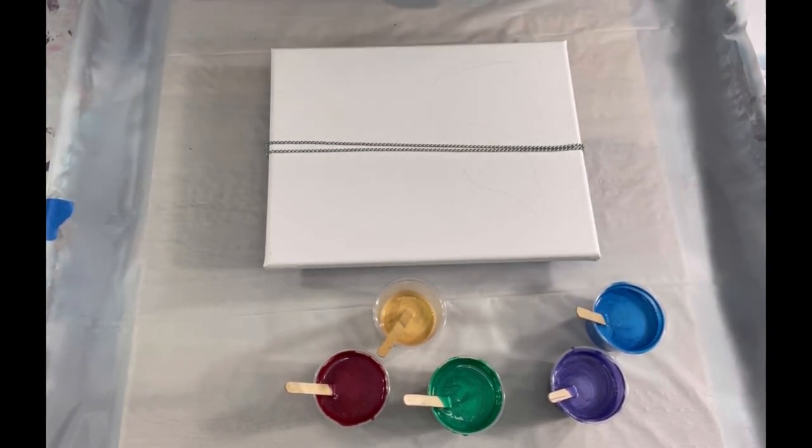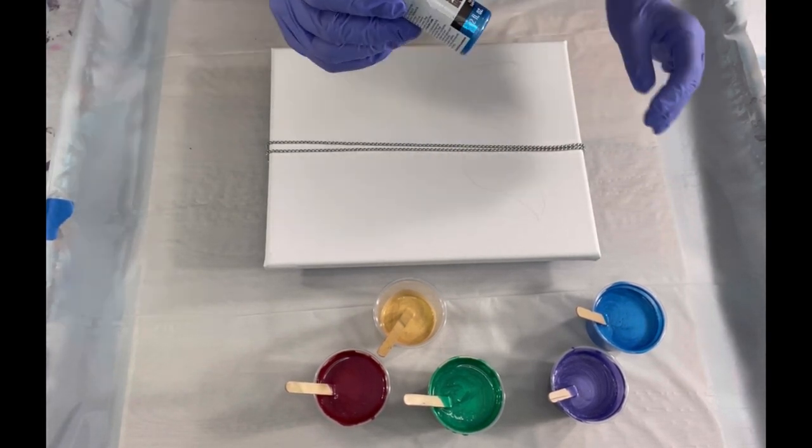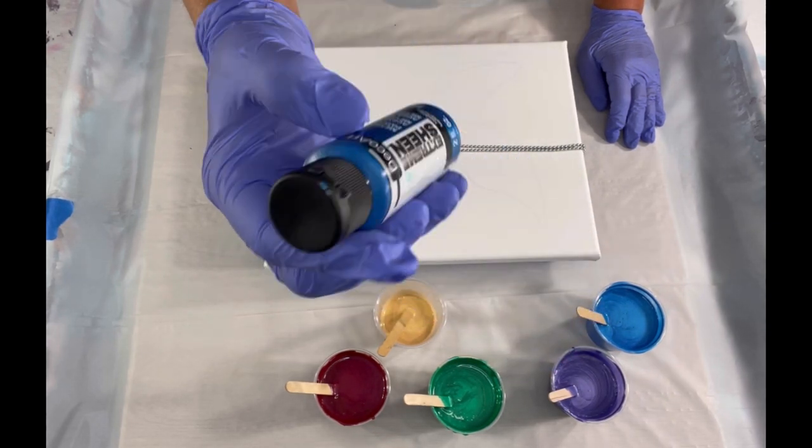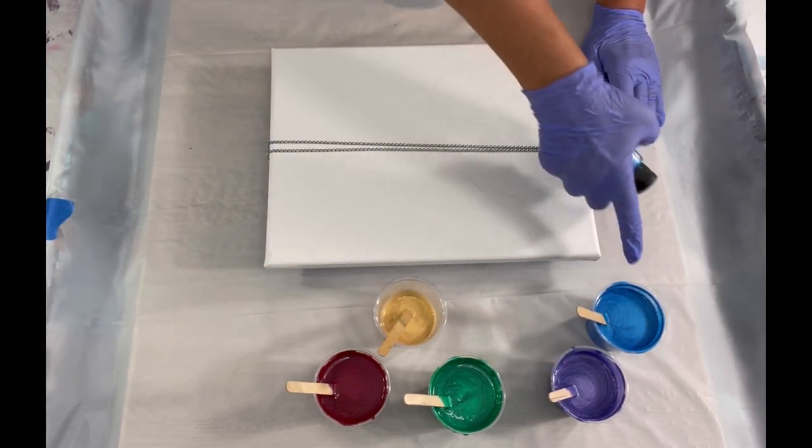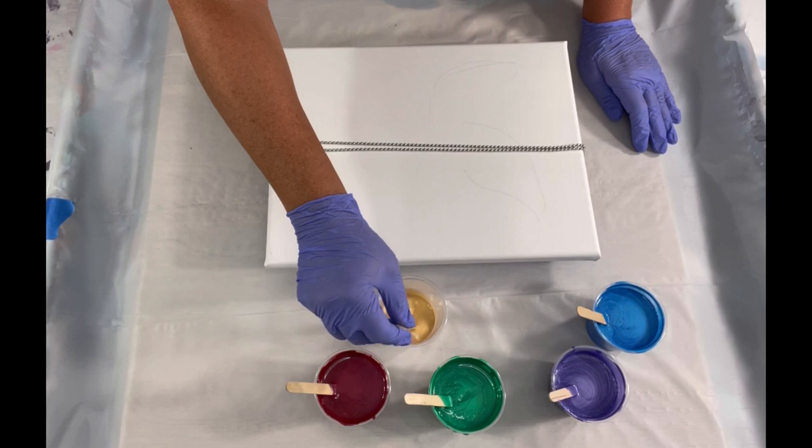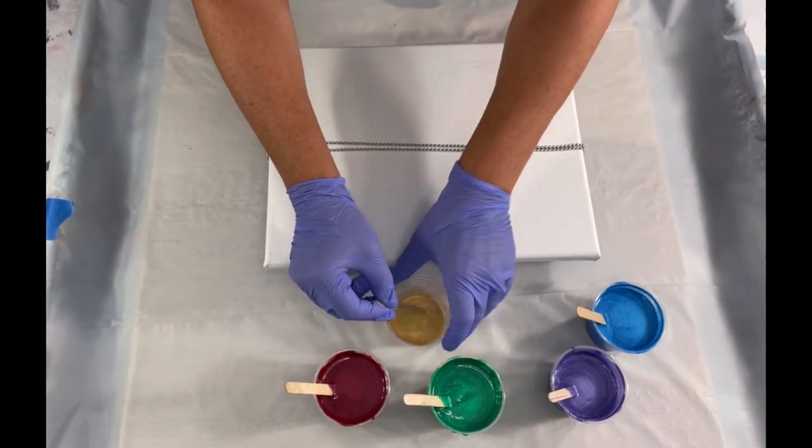I'm going to have a white base, and I'm using the DecoArt Extreme Sheen colors. So this one is sapphire, that's this one right here. I have garnet, which is this one here. I think the other ones are emerald and violet, and a little bit of gold from Amsterdam.